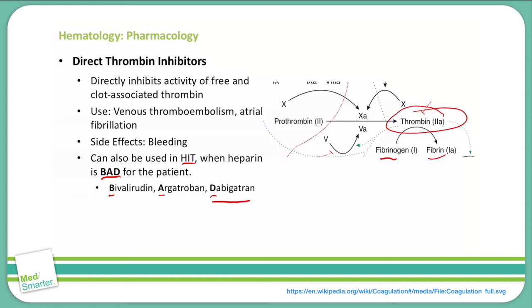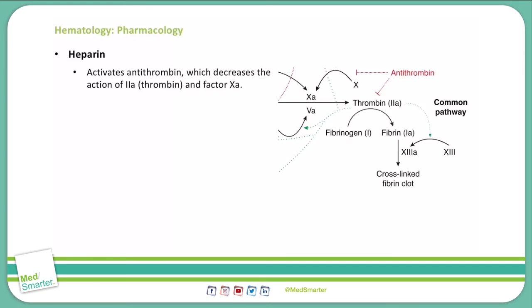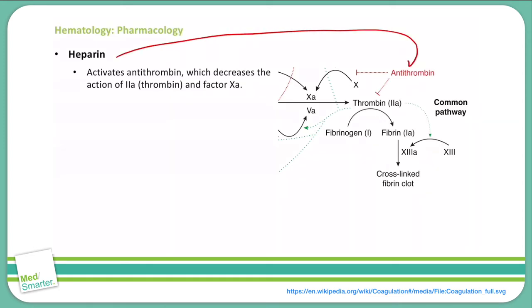Let's continue on and discuss heparin. Heparin is used to activate antithrombin, which will then decrease the action of 2a, or thrombin, and factor 10a. So heparin comes in and has a positive effect on antithrombin, which will then decrease the conversion of factor 10 to 10a, decreasing the ability of thrombin or 2a to form.